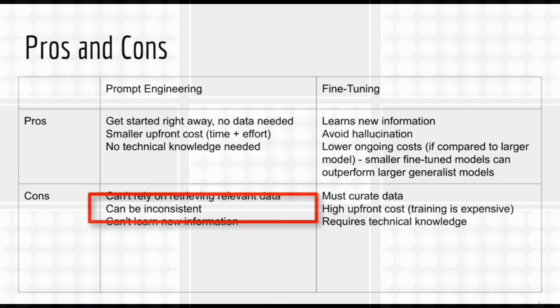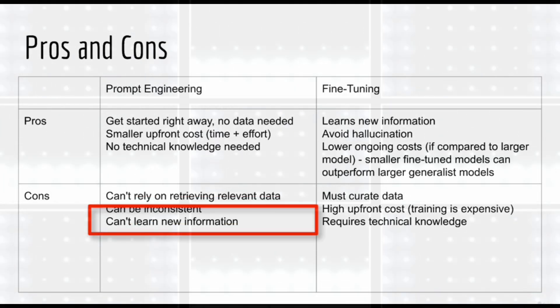This is tied to the previous disadvantages listed above, since forgetting or not retrieving the right data will result in fabricated answers. Another reason prompt engineering may not work well is that it can be inconsistent. For example, you might ask it to produce a JSON, but the JSON string might be invalid, or contain different keys each time. One final disadvantage of prompt engineering is that the model can't learn new information. The model just is what it is, and prompt engineering won't change it.